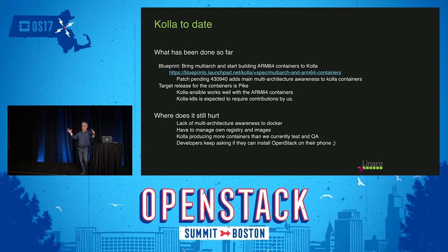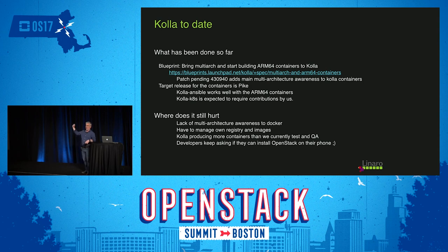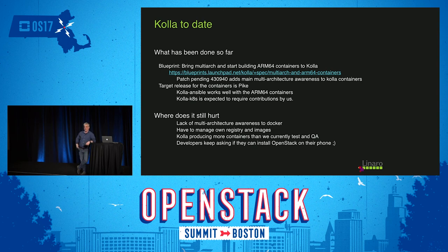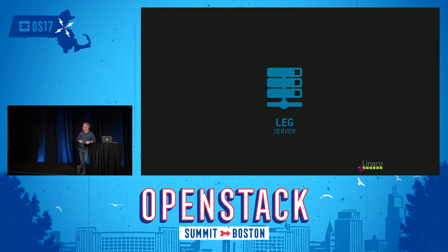KOLLA is a very inclusive project in OpenStack — it's about 198 containers. We only QA and test a much smaller subset because we're really looking at the core reference of OpenStack. While we produce a lot of these containers, there's no QA or testing on all of them. We QA and test what we use to run a functional OpenStack cloud. And developers keep asking us if they can install OpenStack on their phone — but it's for Cavium or Qualcomm servers, not phones.